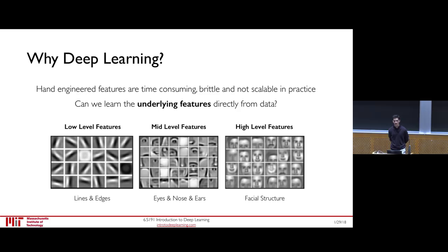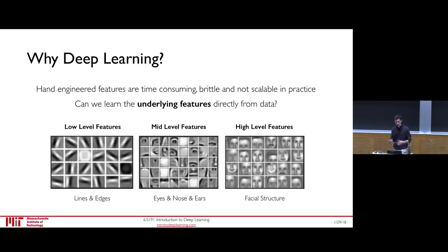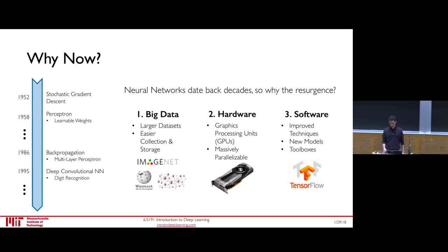What deep learning tries to do is learn these features directly from data, as opposed to having them hand-engineered by humans. For example, to detect faces, can we automatically learn from data that we first need to detect edges, then compose those edges to detect eyes and ears, then compose those to form higher-level facial structures? In this way, deep learning represents a hierarchical model capable of representing different levels of abstraction in the data.